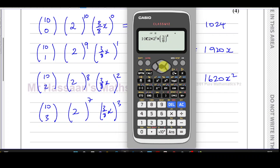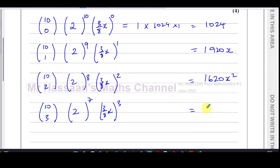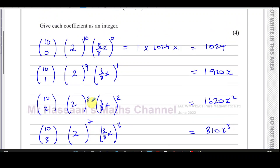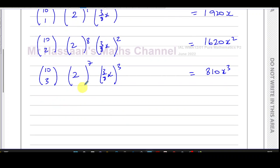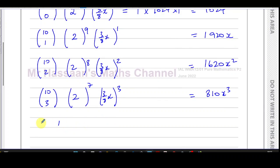Finally, we're going to have this term here, so we just go and change this to a 3, change that for a 7, and change that for a 3 as well. That gives us 810. This will be x cubed. So we end up with our answer: 1024 plus 1920x plus 1620x squared plus 810x cubed. That's as far as we go - the first four terms in this expansion.